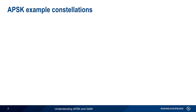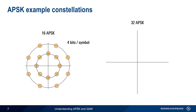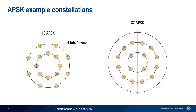Let's look at two example APSK constellations. In this 16 APSK constellation, we have two amplitude states, and eight symbols per state. 16 states means that each state can carry or represent four bits. This 32 APSK constellation has three amplitude states. The inner amplitude level has only four symbols, the middle amplitude state has 12 symbols, and the remaining 16 symbols are in the outer amplitude state. 32 states means that each of these symbols corresponds to five bits.